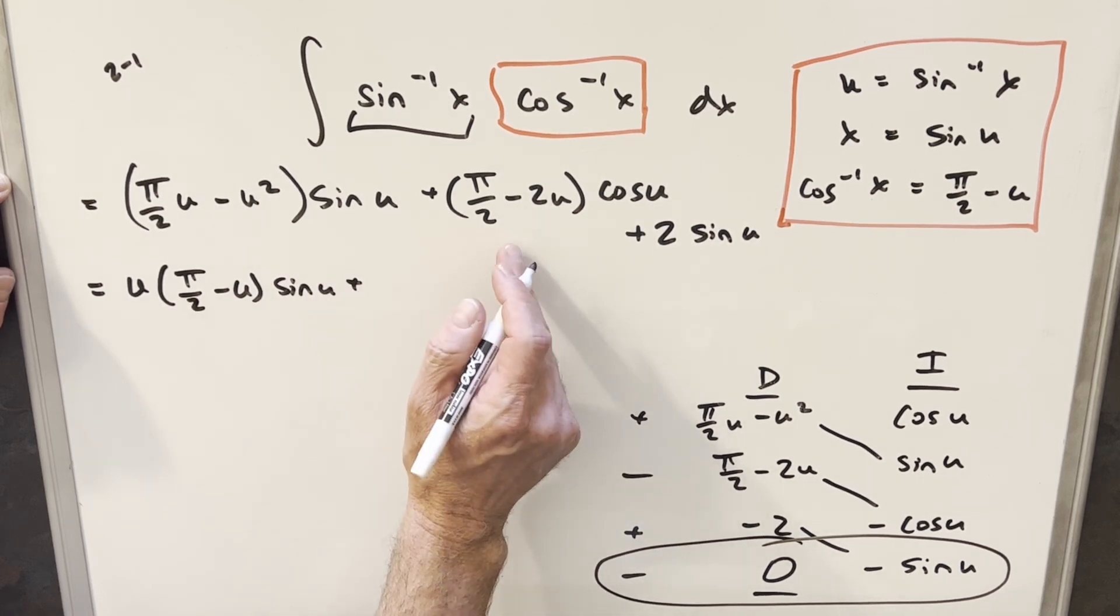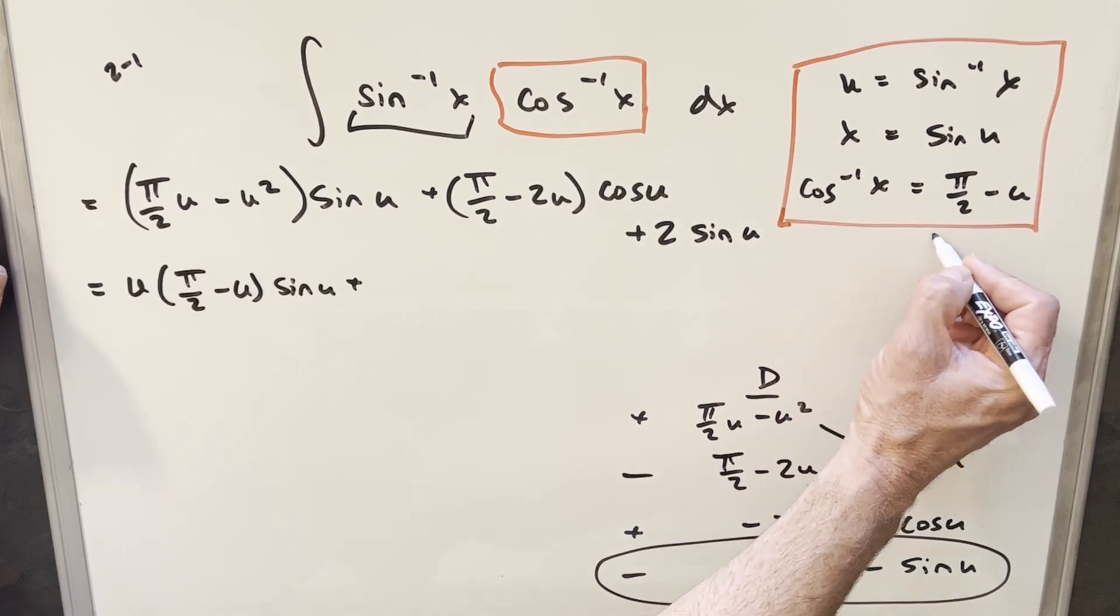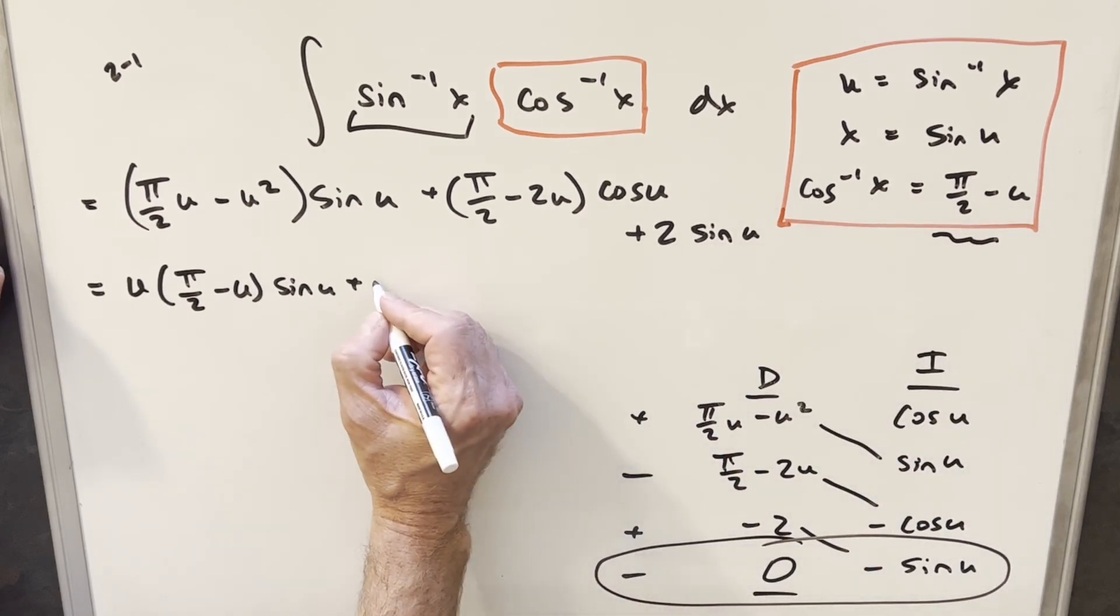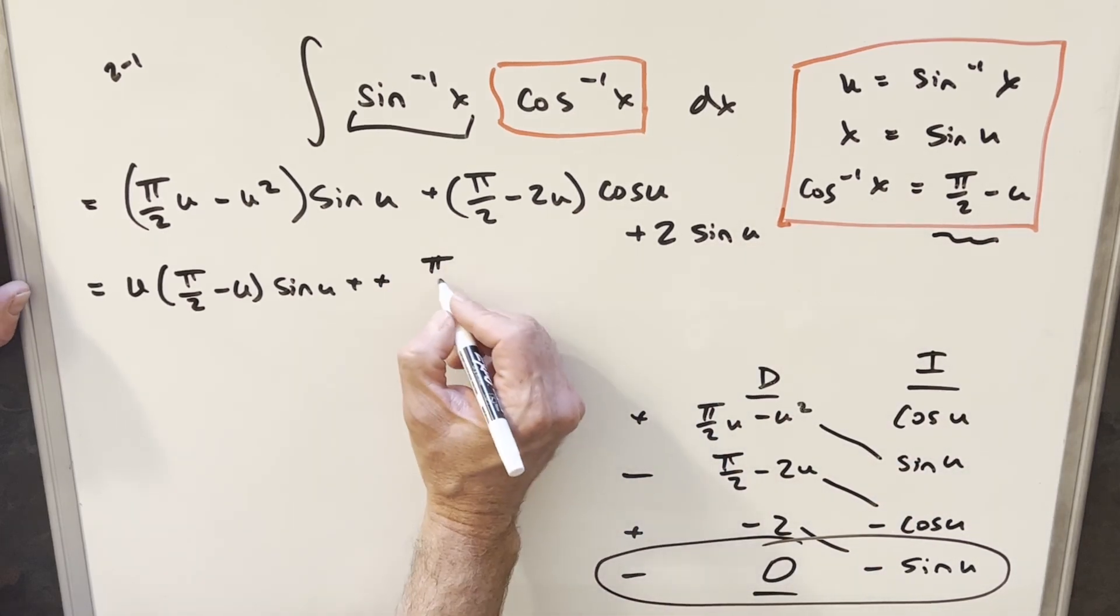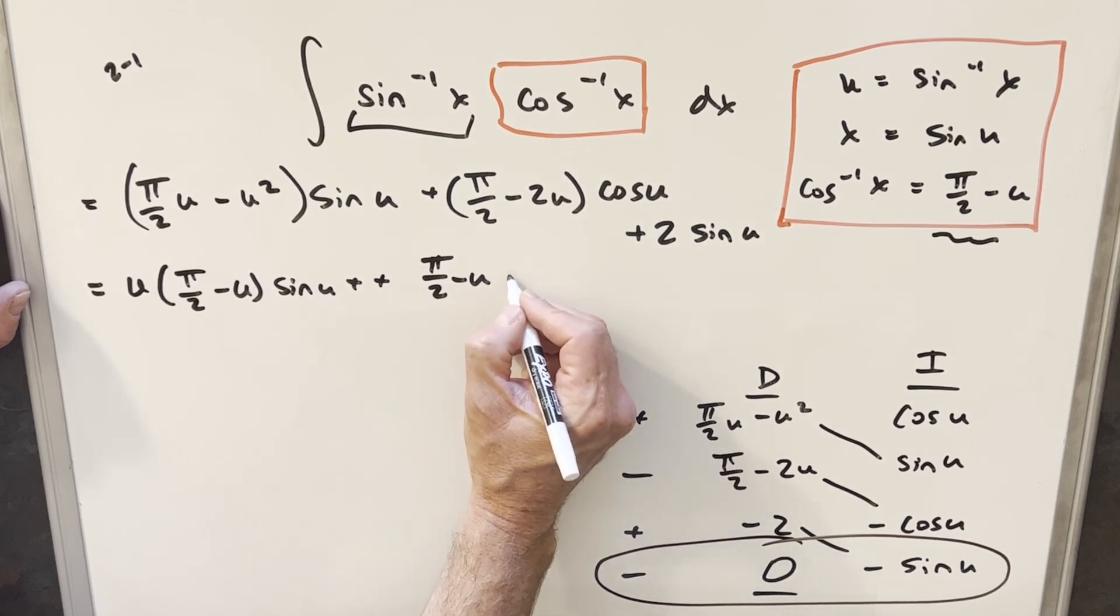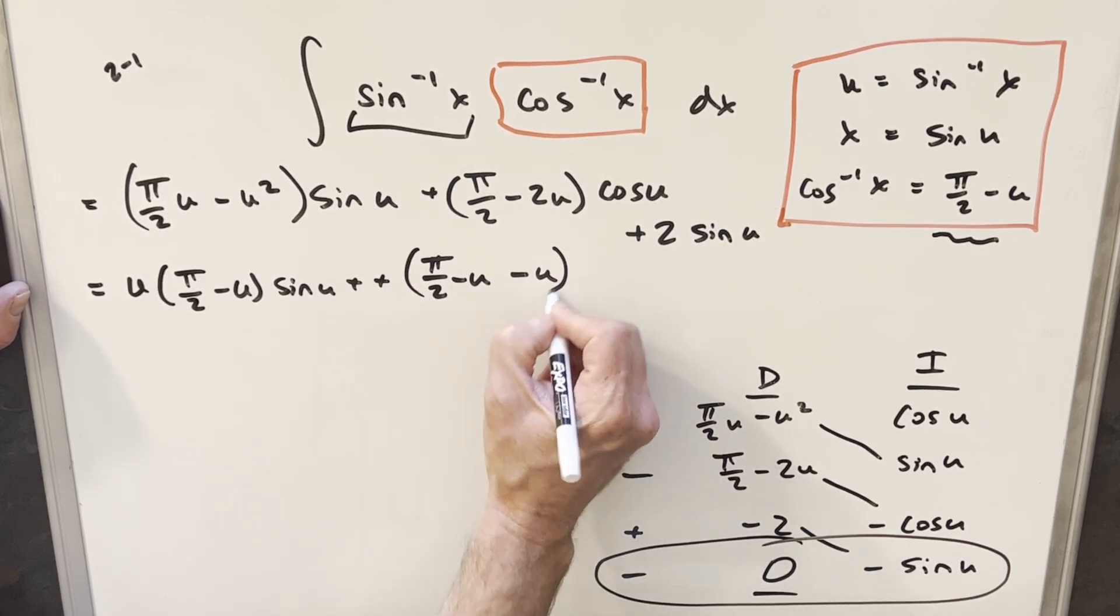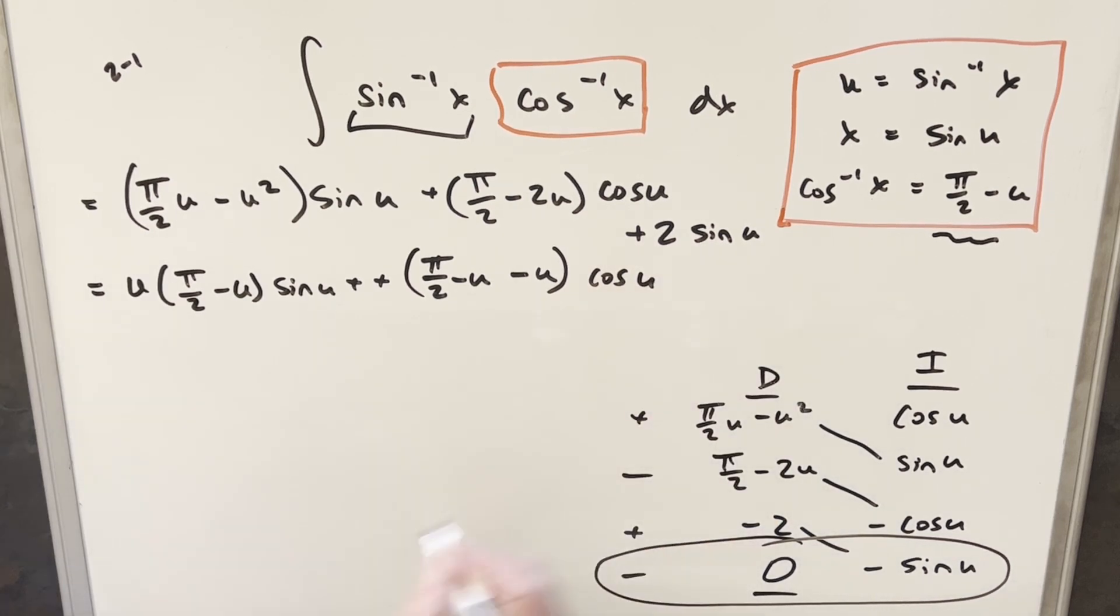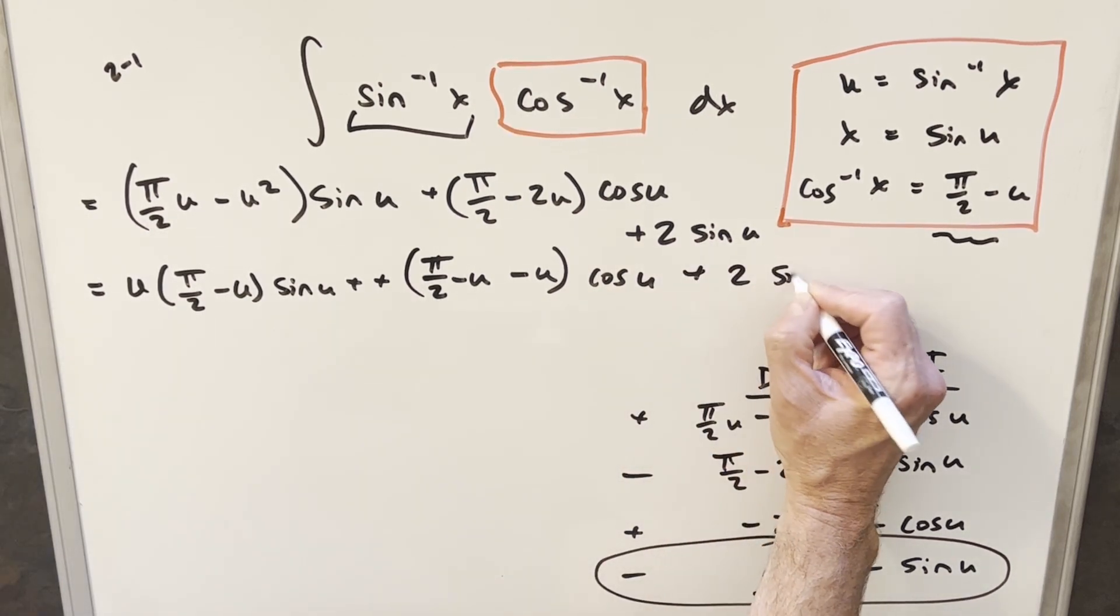Something similar here. What I'm trying to do is because we have an expression right here for π over 2 minus u, I want to use that. So I'm going to take this and write this as π over 2 minus u minus u. It's going to help me with my substitution. And then we'll just bring this other stuff down.